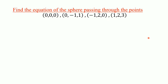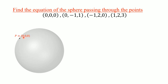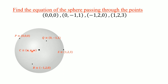We have to find the equation of the sphere which passes through four given points. These four points lie on the surface of a sphere. Our point P is (0, 0, 0), point Q is (0, −1, 1), point R is (−1, 2, 0), and our last point S is (1, 2, 3). All these points lie on this sphere — assume it as a hollow sphere. Suppose the center is C(u, v, w).